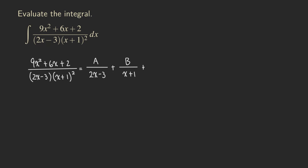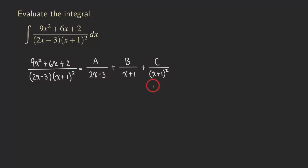And then we actually need to start going up, so we go up to x plus 1 squared and put a C on top of that. We stop there because we already hit the highest power. If that exponent were a 3, then you would need to write one more partial fraction with a denominator of x plus 1 to the third power, and so on. So that's the form for the decomposition.